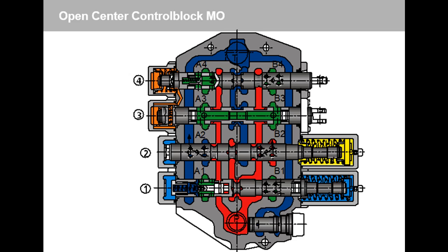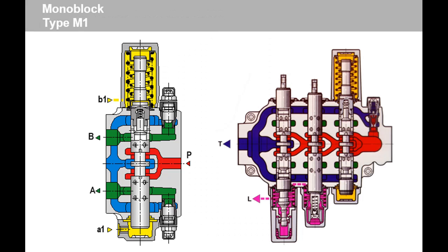Features. One to four spools in one high-pressure mobile control block. Parallel circuit. In the four-spool block, the fourth spool may be in tandem circuit if required. Combination and tandem circuits available on inquiry.